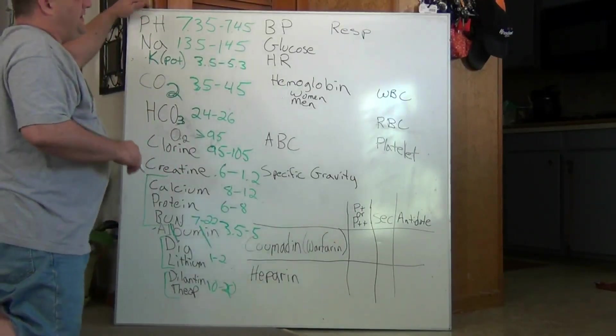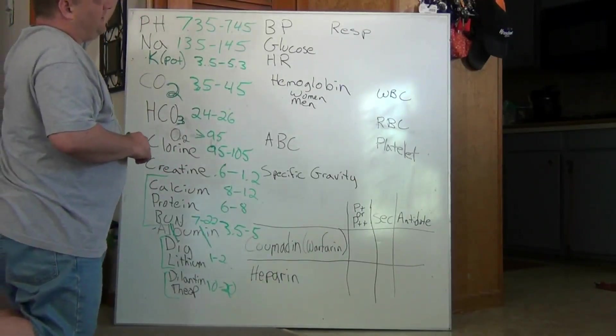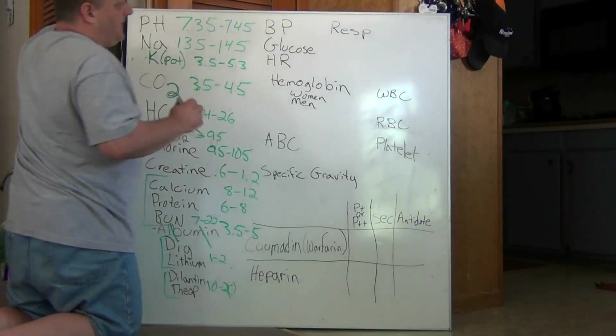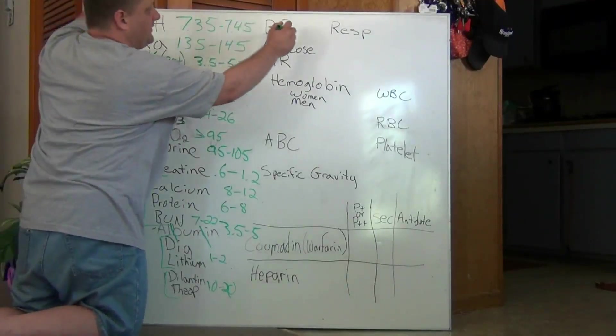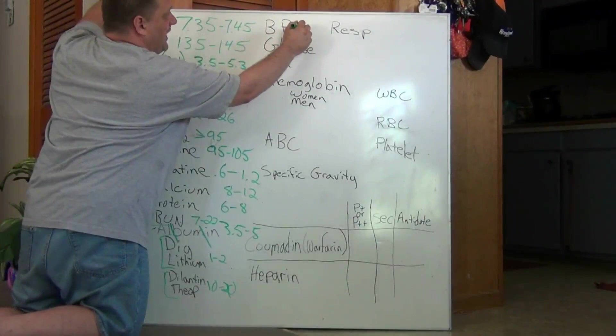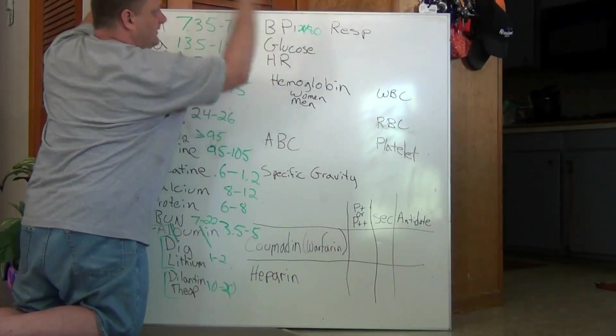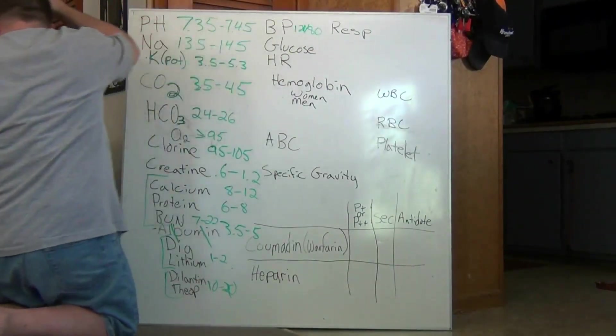On blood pressure, blood pressure, the typical range for normal blood pressure would be 120 over 80. And we can have fun with that.